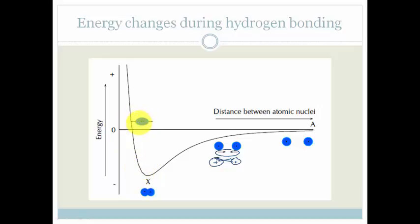At this point here the two atoms are almost on top of each other, and now we've got the repulsive forces that are really coming into existence — they're very strong at this point. The proton in this atom is repelling the proton in that atom, and the electrons from this atom are repelling the electrons from that atom. You've got the atom here and the atom here and they're being attracted towards each other, and they keep coming closer and closer towards each other.